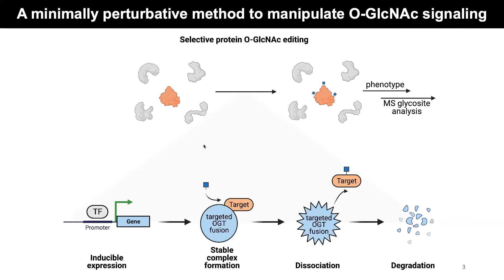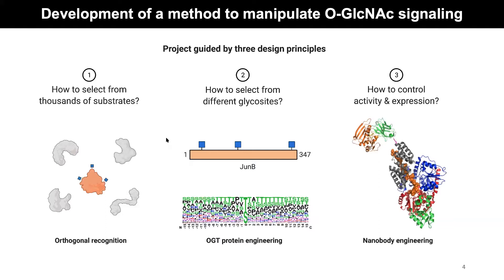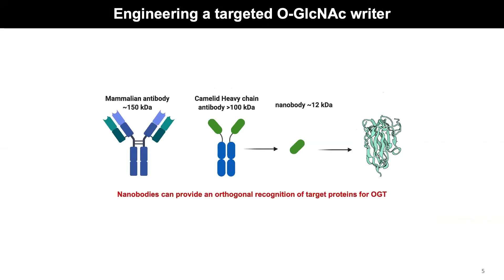In order to develop this method, there were three main areas that guided this project. The first is: how do you actually select from the thousands of substrates that OGT is able to modify? To date, there are over 5,000. Since it's still not very well understood how OGT selects from different substrates, you can take an orthogonal approach.